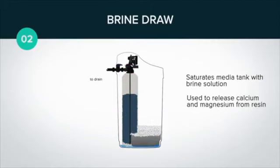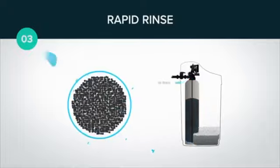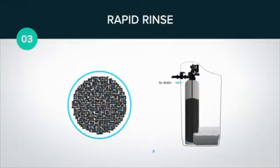Now with the media tank full of dissolved salt water, it's time for step three, rapid rinse. Since our resin bed is still expanded, we will need to compress the bed back down and rinse the residual brine water and contaminants from the media tank.